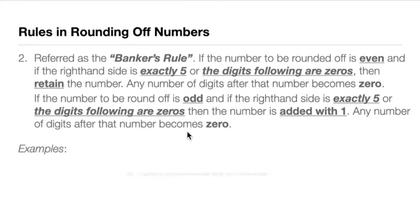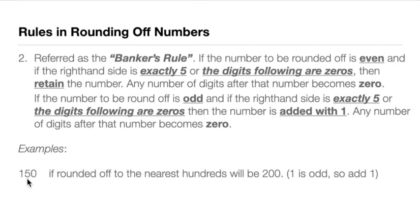As an example, say we have 150 rounded off to the nearest 100. We look at the hundreds digit, which is 1, and to the right of that 1 is 5 — exactly 5. We ask ourselves: is 1 odd or even? Since 1 is odd, we follow the banker's rule and add 1, so the answer becomes 200.